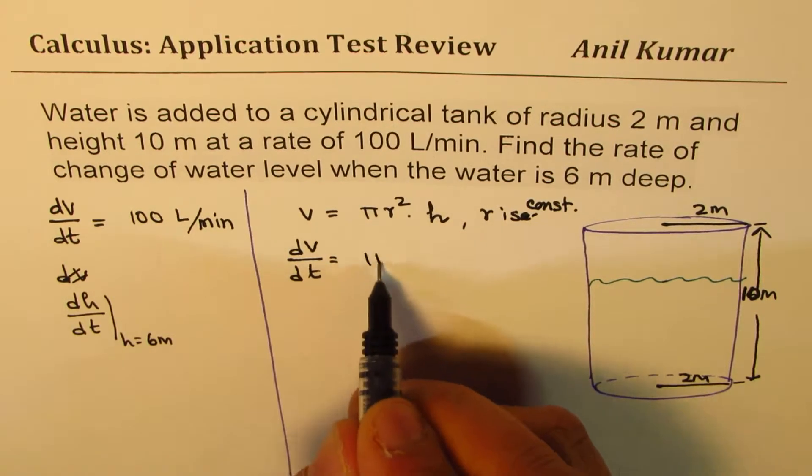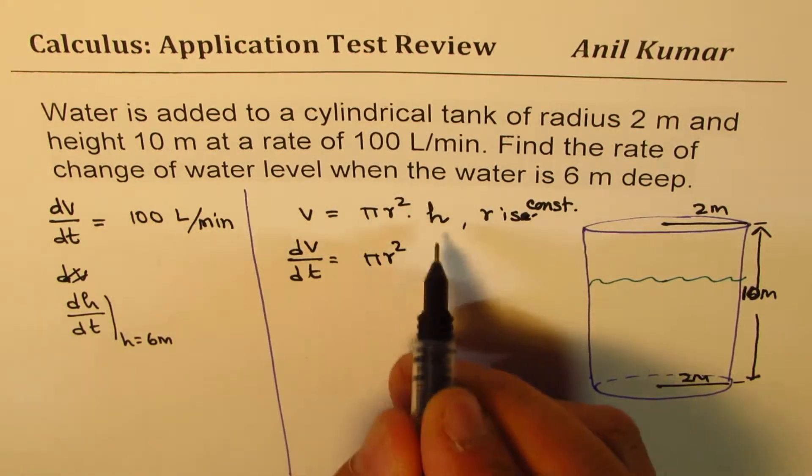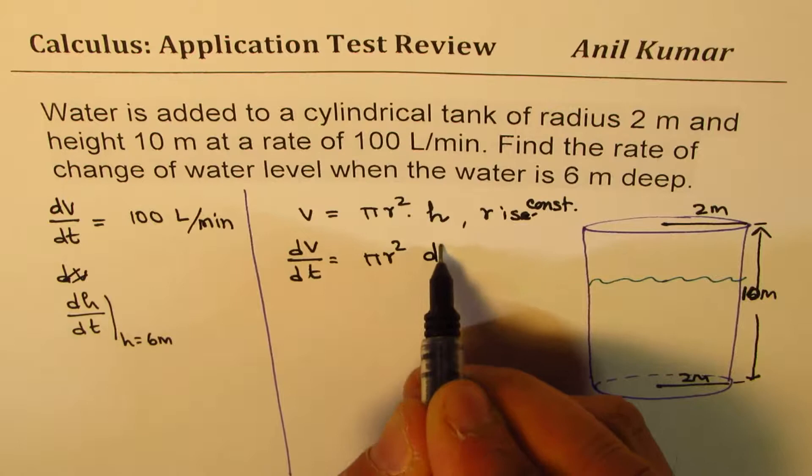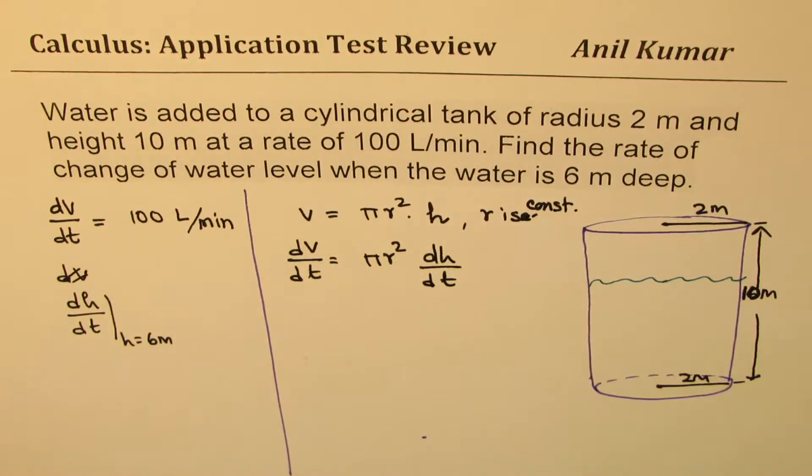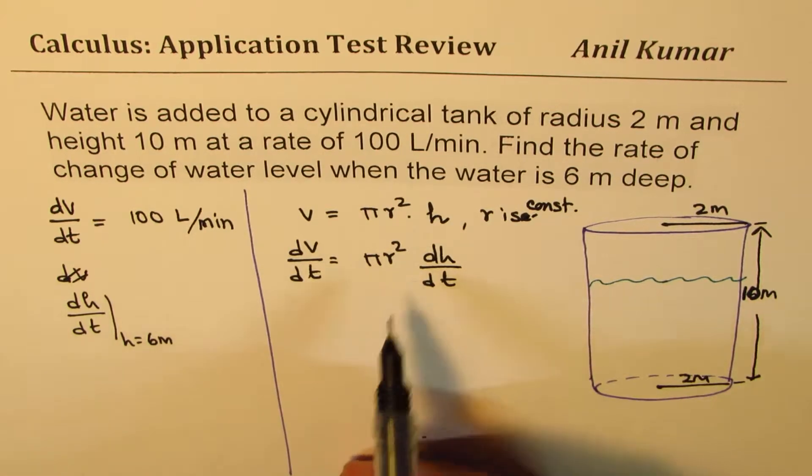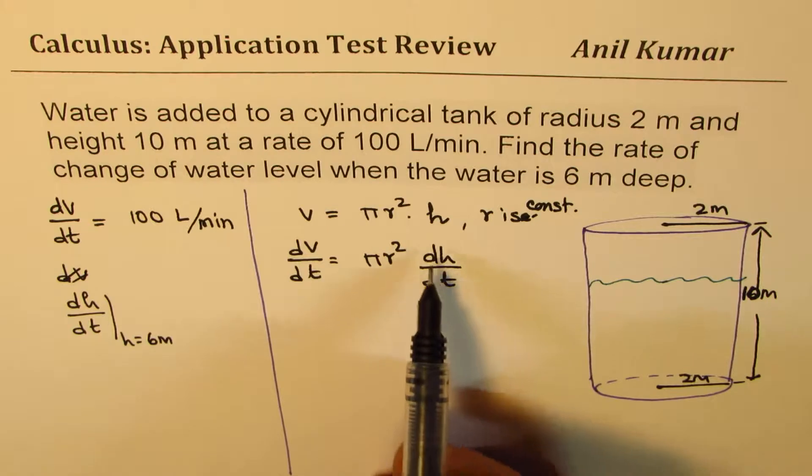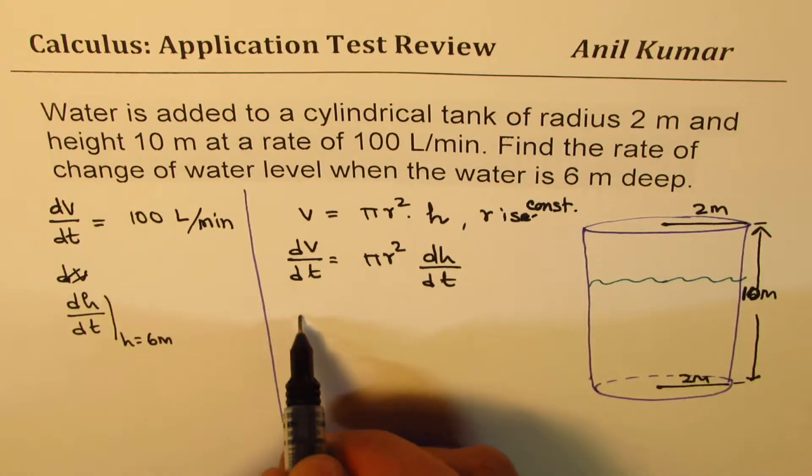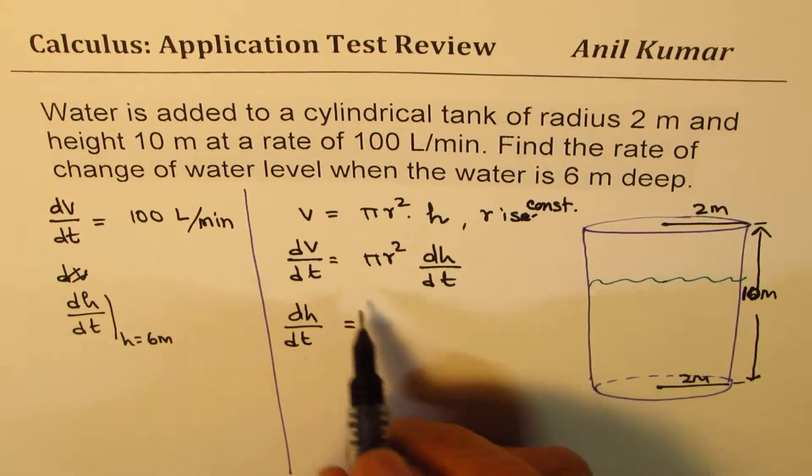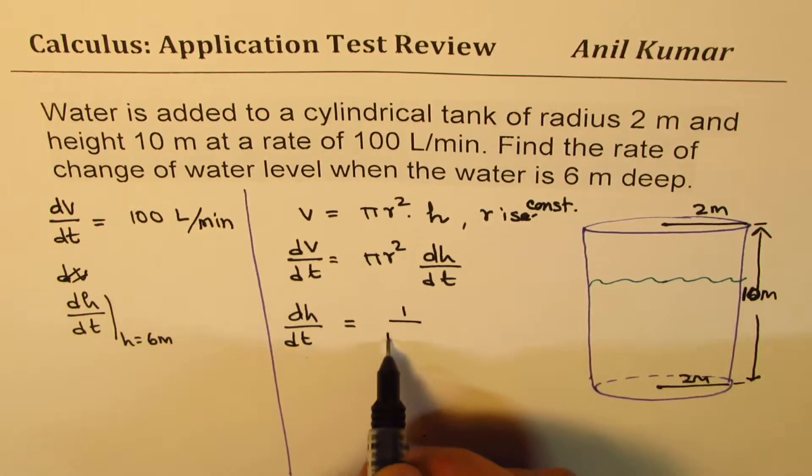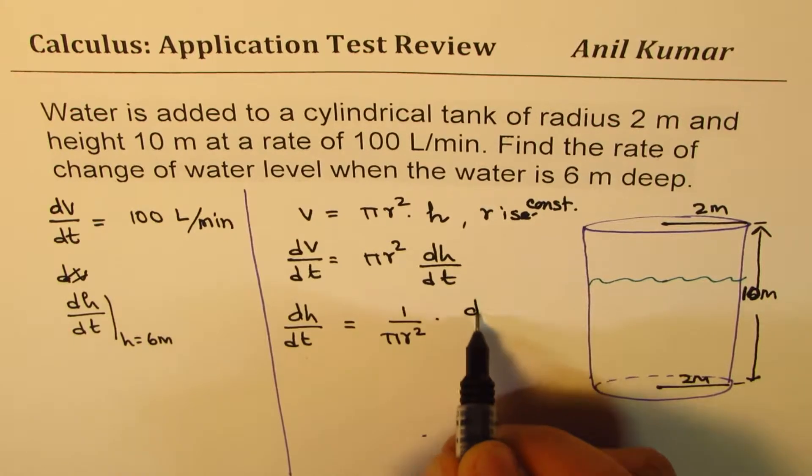Therefore, the derivative will be pi r square will be as such and derivative of h is going to be dh/dt. This is important to understand. So don't apply product rule or something and make a mistake. So that could be one mistake. Now we can isolate and find what dh/dt is. So we have dh/dt equal to 1 over pi r square times dV/dt.